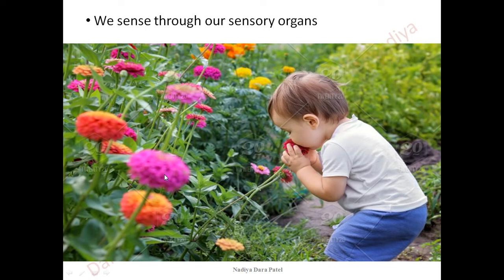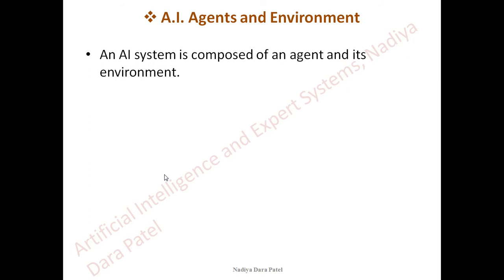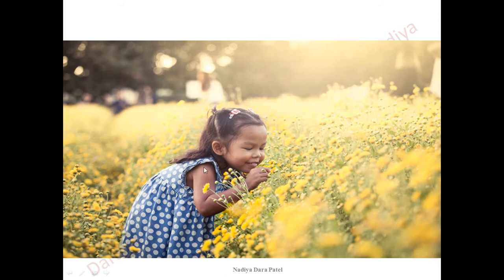This is how we make use of our memory and past experiences. Speaking in technical terms, an artificial intelligence agent and environment is a very important component for making AI work. These agents actually act in their environment. If the child is the agent and the garden is the environment, the agent is actually working in the environment.